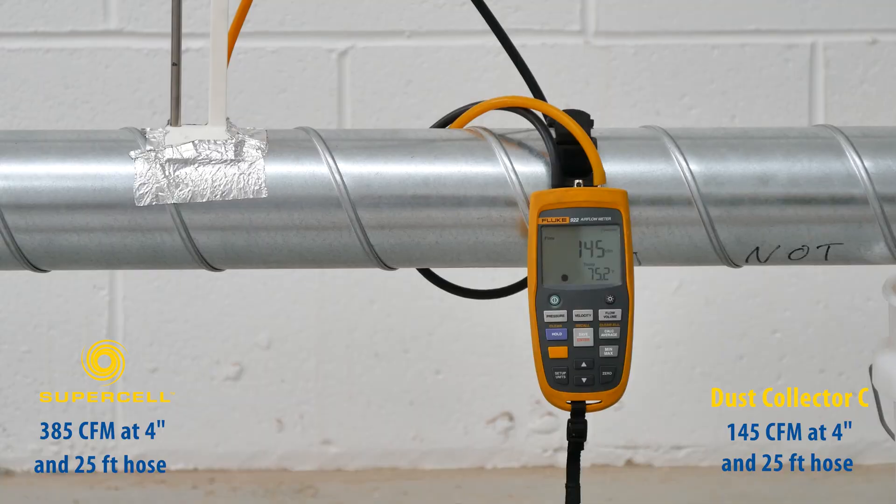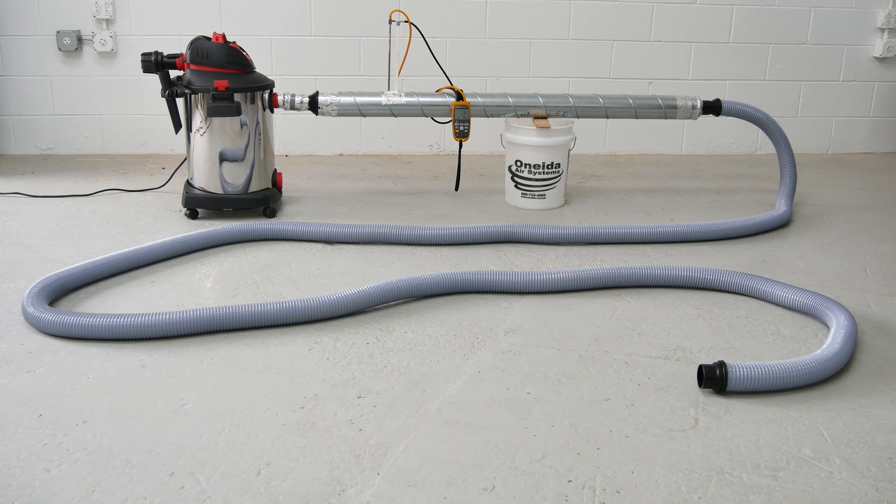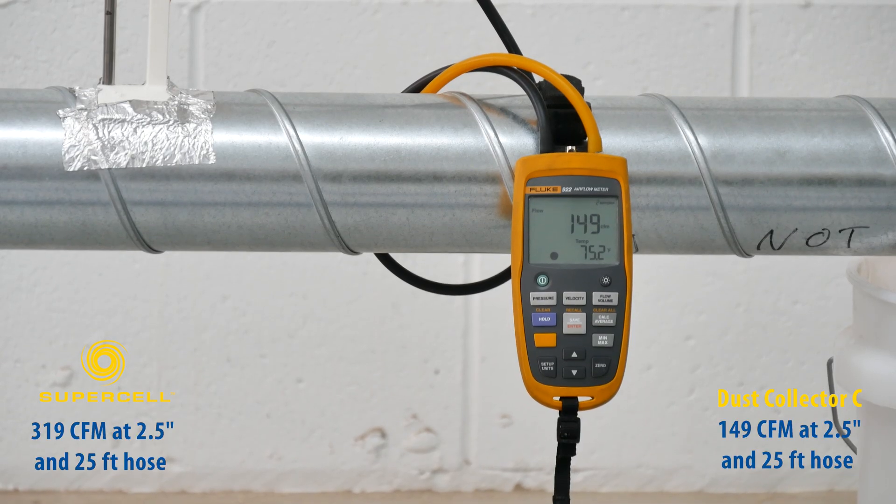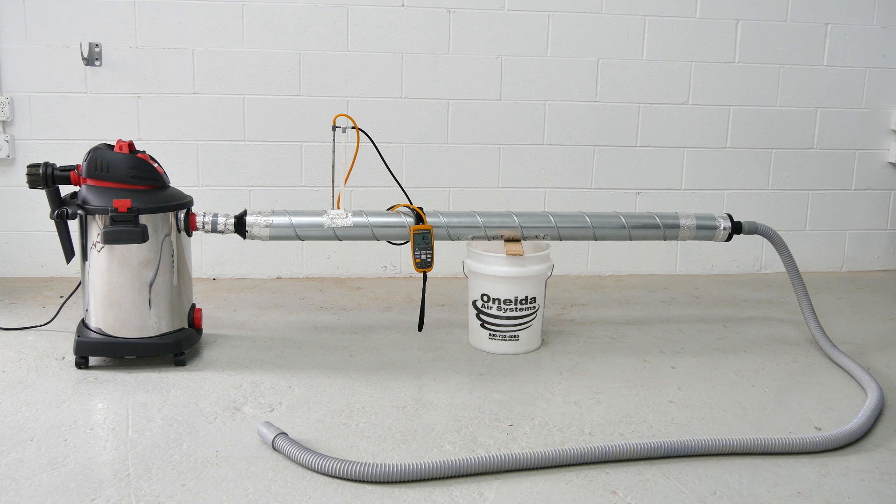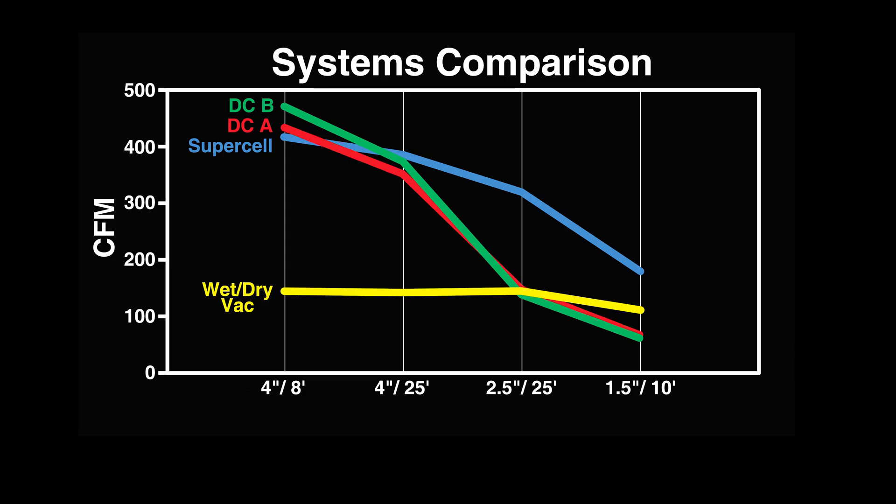Moving to 25 feet of 2.5-inch hose, the wet-dry vac pulls around the same, 149 CFM. Finally, with 10 feet of 1.5-inch hose, the wet-dry vac pulls 110 CFM. While the wet-dry vac has better numbers than traditional dust collection systems through smaller ports, it doesn't have enough air to collect dust and debris nearly as effectively as the Supercell.